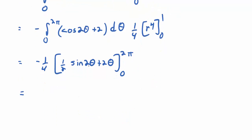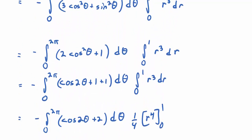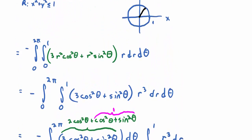I plug in 2 pi here, sine of 4 pi is 0. So we get negative 1 fourth times 0 plus 4 pi. And then what happens if I plug in 0? Everything is 0. So I get negative pi. So that was the hard one, or the long one. And that's the flux integral over S1.